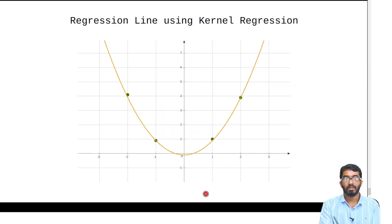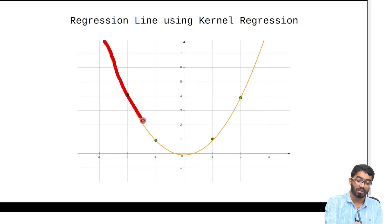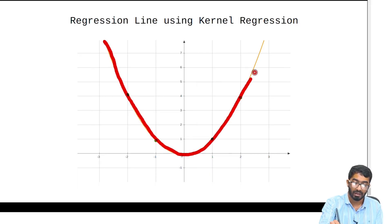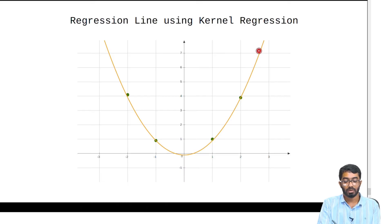When we plot our regression line, as you can see, this is a quadratic function, and all our data points — the true values — are very close to the regression line itself.